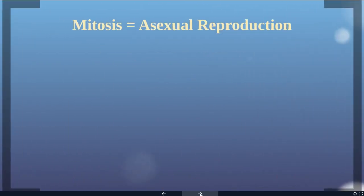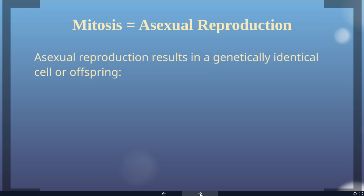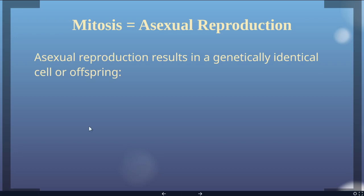Mitosis is a form of asexual reproduction, and asexual reproduction results in a genetically identical cell or offspring. Latin roots: if you put an A at the beginning of something, it means 'not that.' So this is not sexual reproduction — just like if something is amoral, it's not moral.